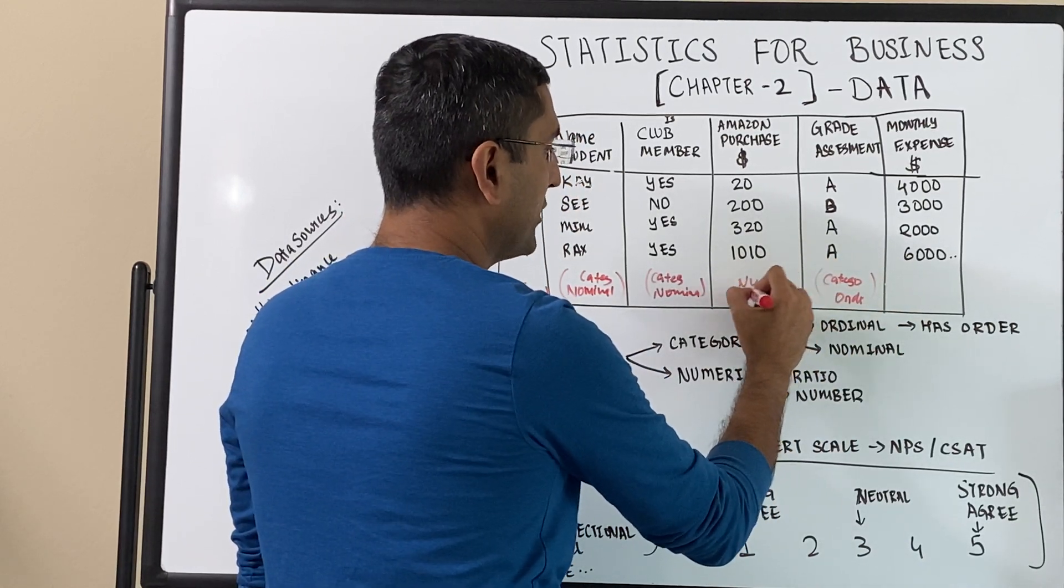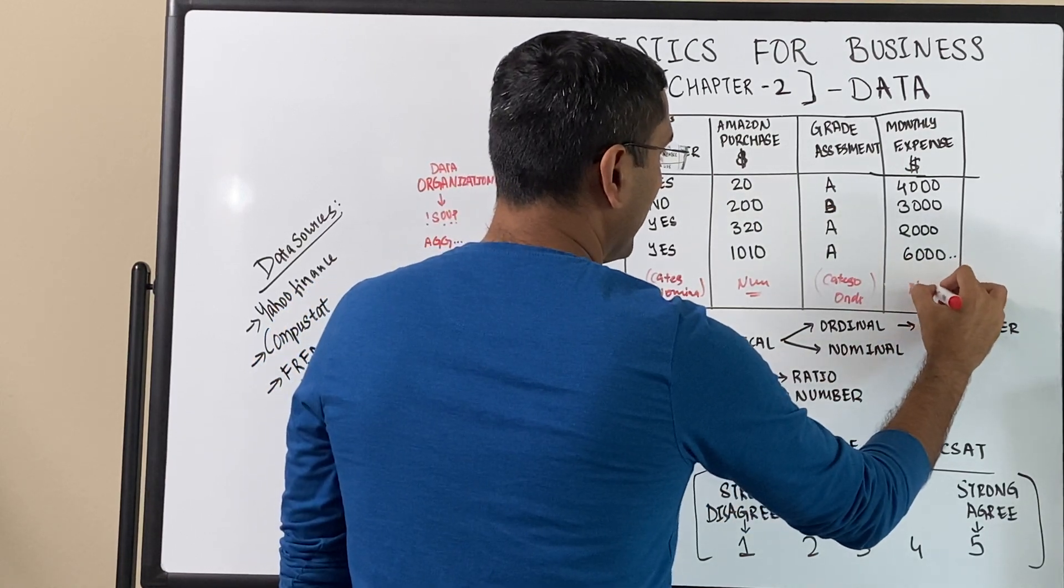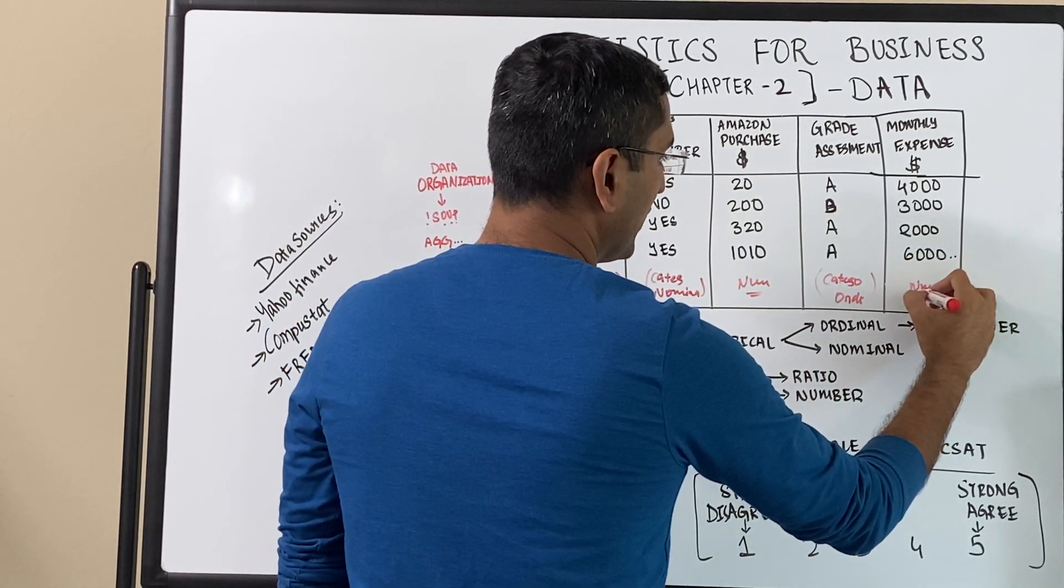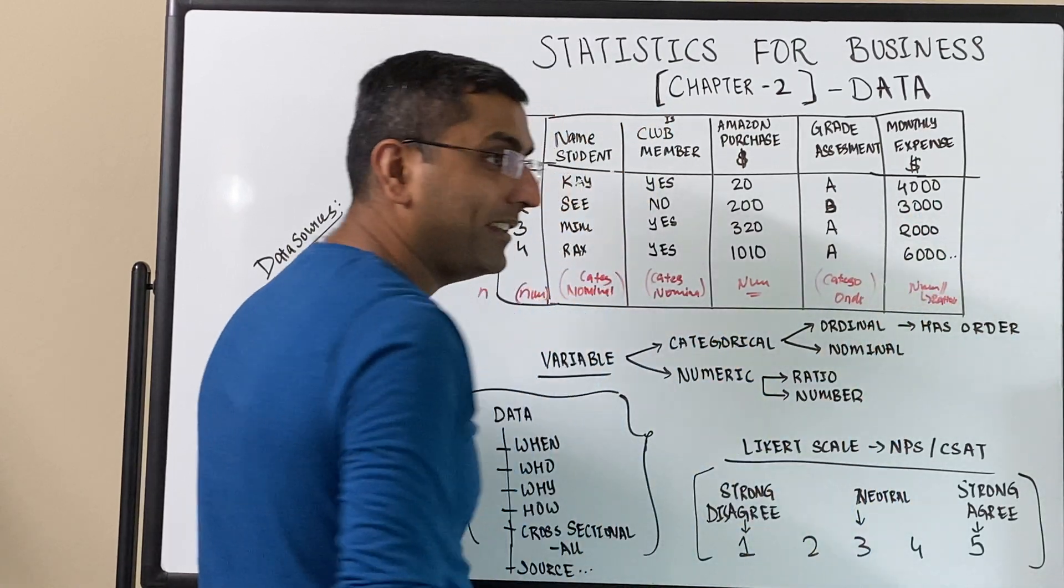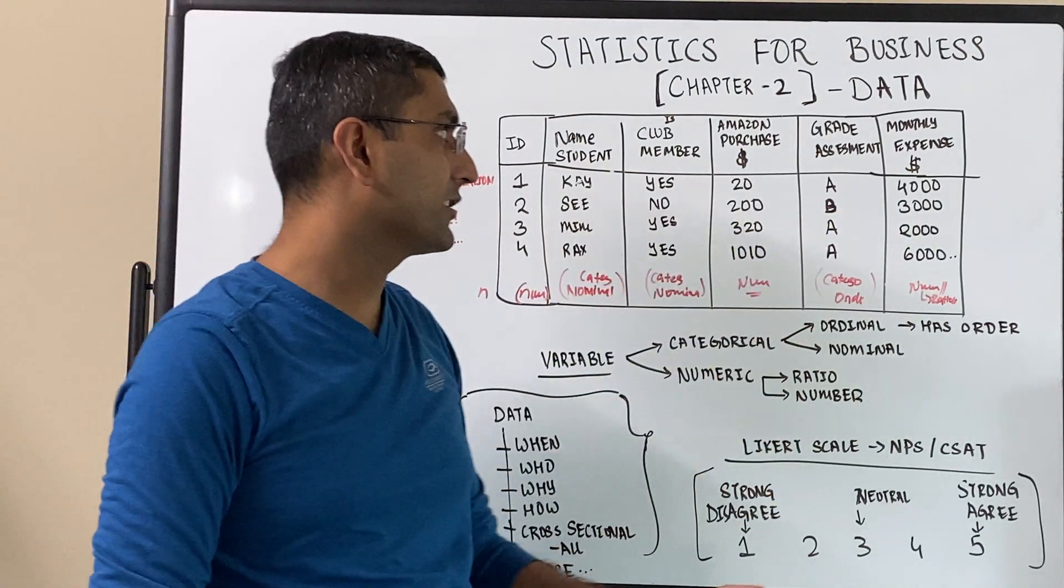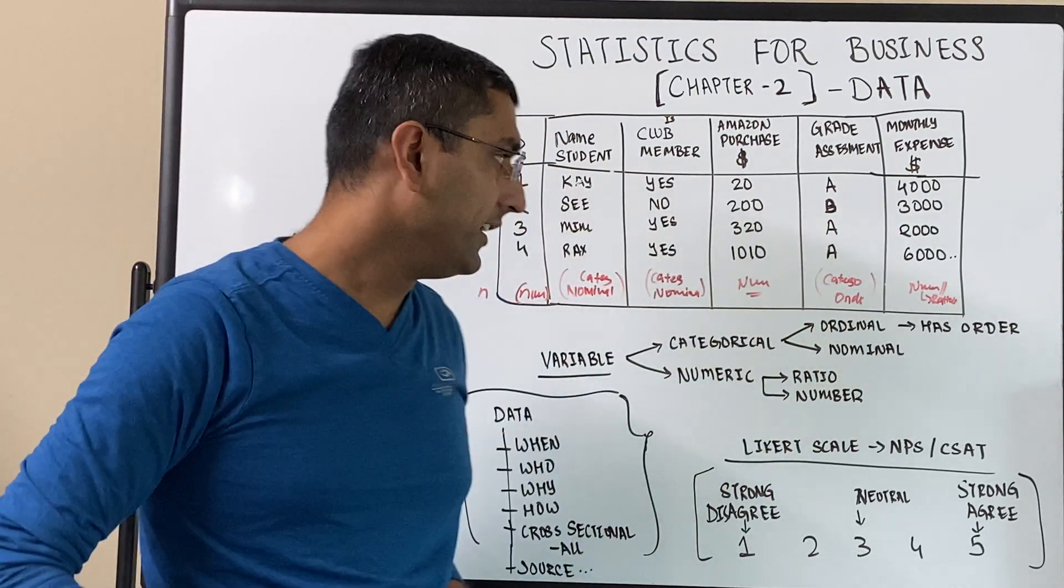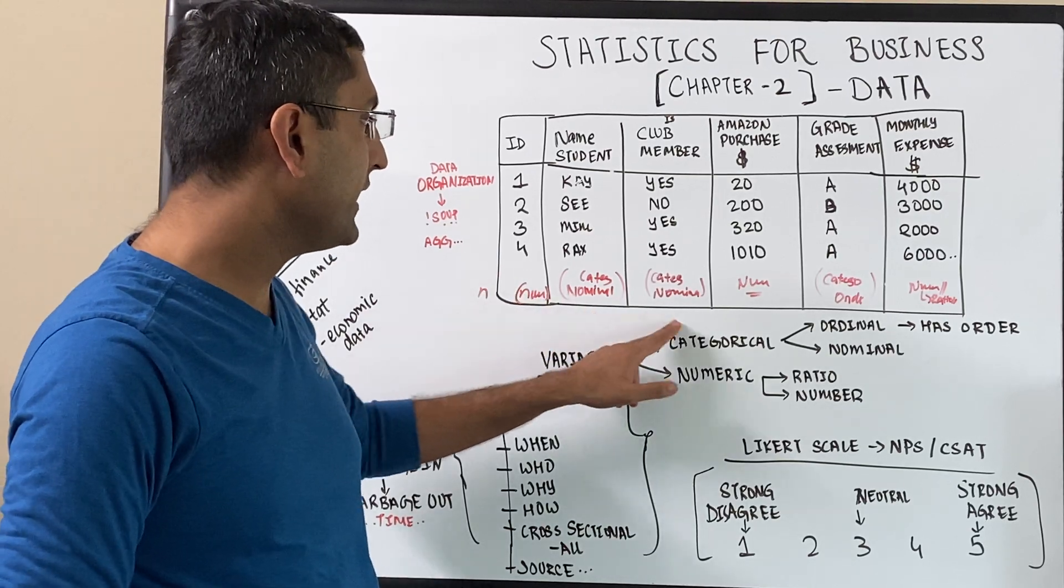And these two are numeric. How much was the Amazon last purchase price and what is their monthly expense? And this, you could also say this is a ratio for a number of days. Certain months have less number of days. And so you could say it's a ratio of expense per number of days. So we saw that understanding what kind of data we have, what are the variables is very important.